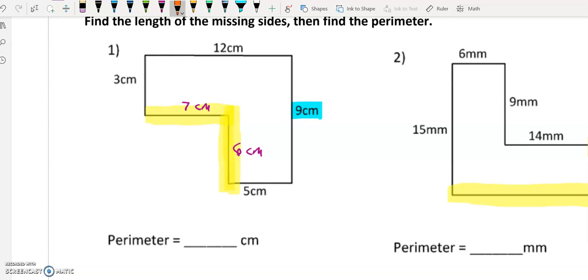So in order to find the perimeter now, because that is kind of our end goal here, is to find the perimeter, all I have to do is add up all of my sides.